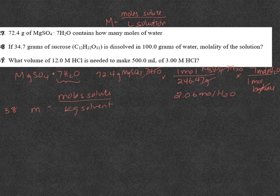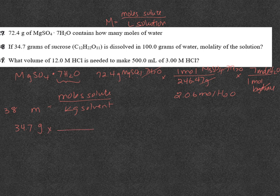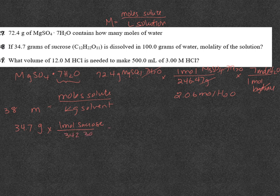So for 38, we have 34.7 grams of sucrose dissolved in 100 grams of water. Sucrose is the solute, water is the solvent. So I need to convert 34.7 grams to moles. So one mole of sucrose has a molar mass of 342.30. And I get 0.1014 moles.